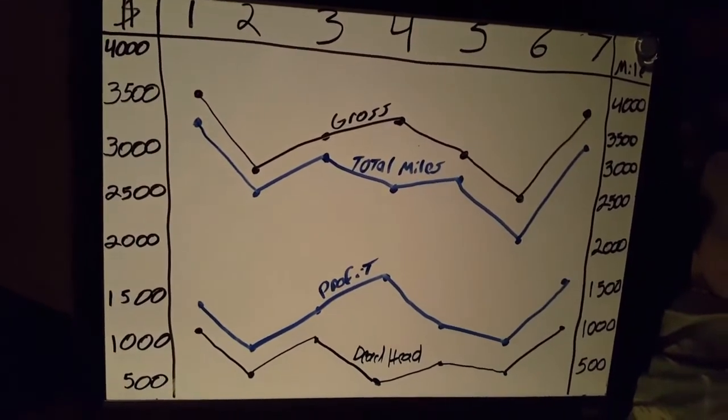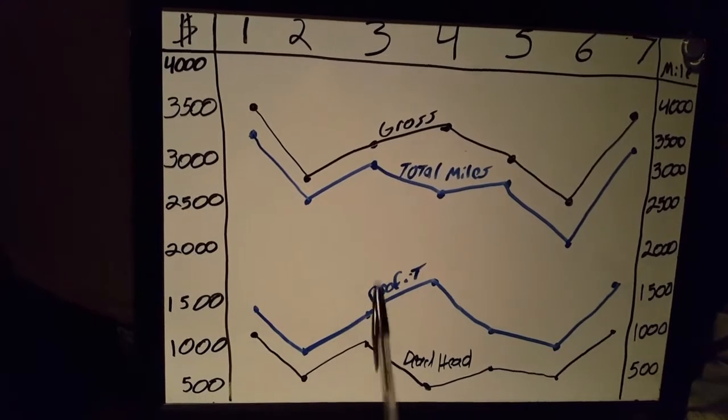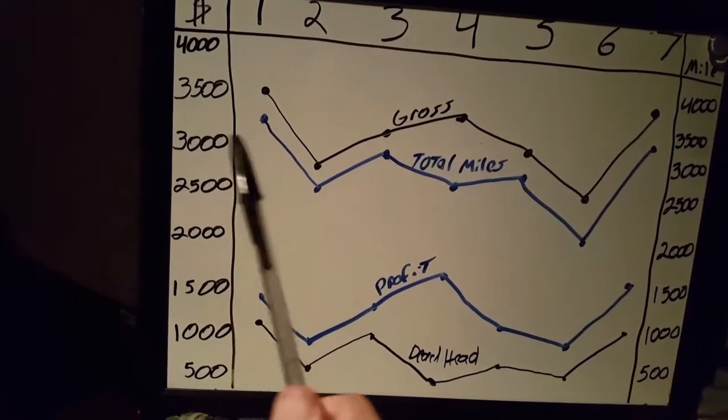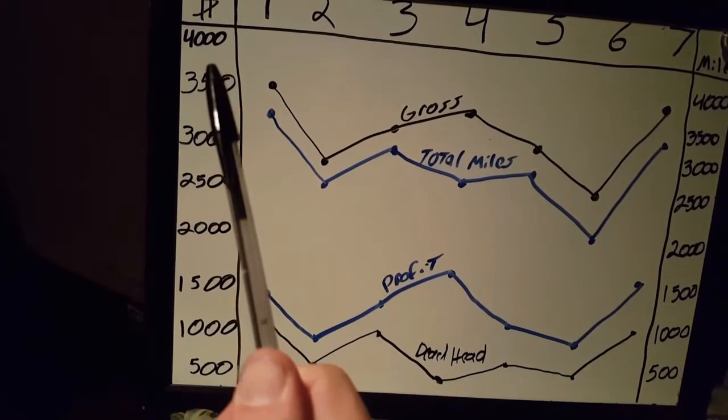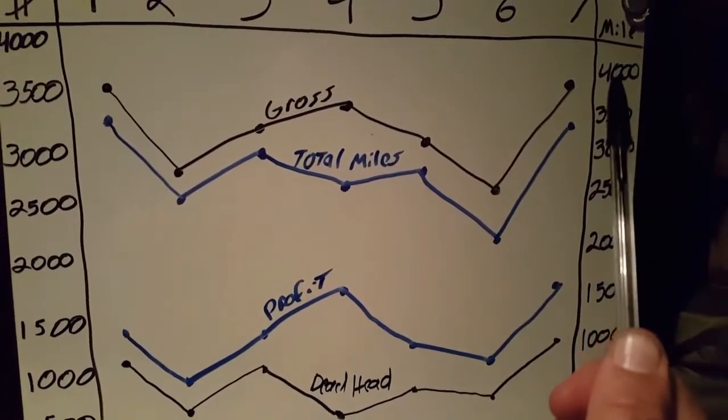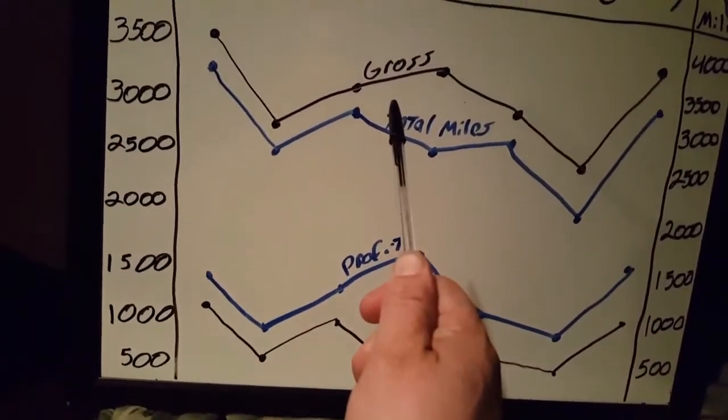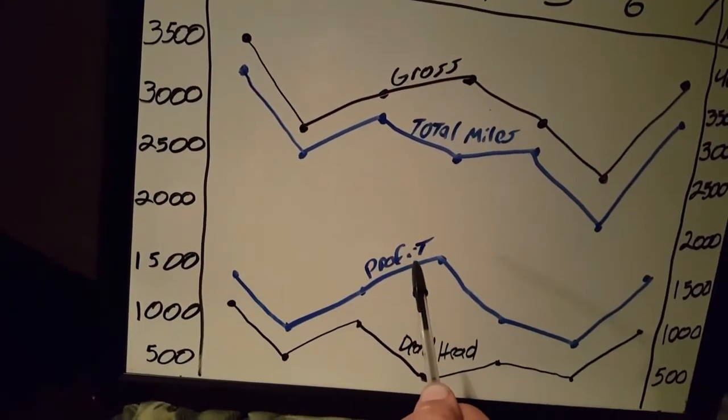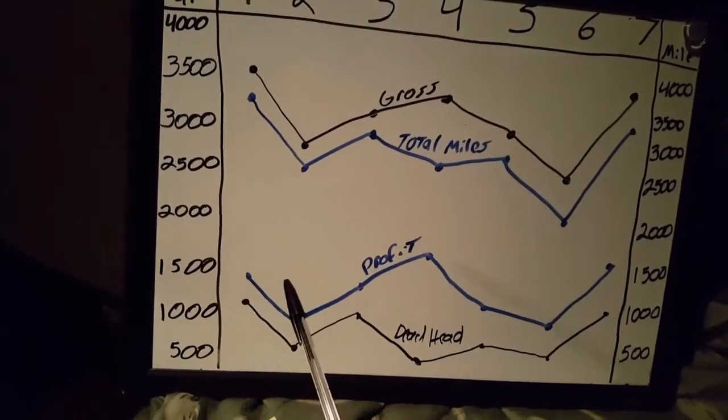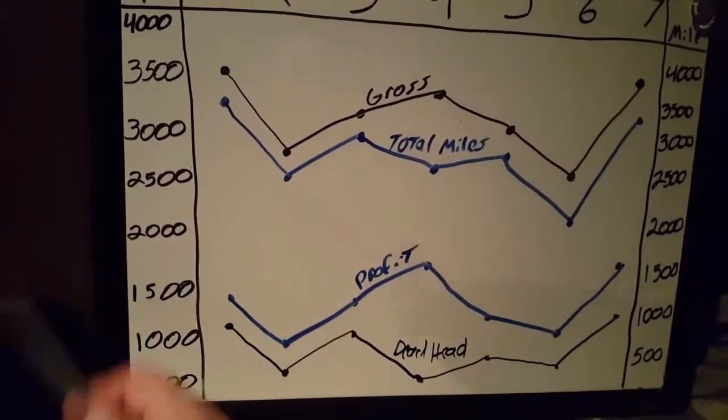Good evening ladies and gentlemen, how y'all doing? Another episode of Friday numbers and this week I am playing with the whiteboard, making a graph. This is week one through seven. This side lists our money, $4,000 down to $500 in $500 increments. Over here it's going to be the miles, $4,000 down to $500 in $500 mile increments. This is going to be our gross earnings and our profit. This is our total miles compared to our deadhead miles.